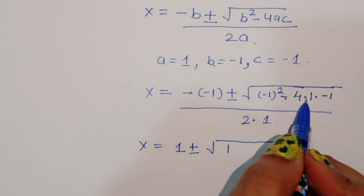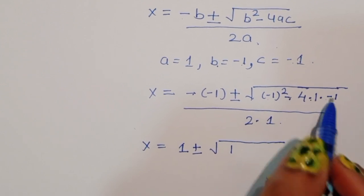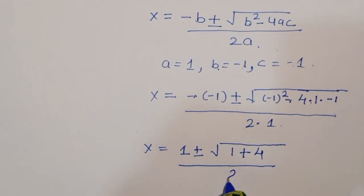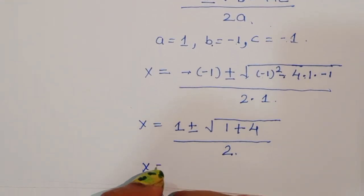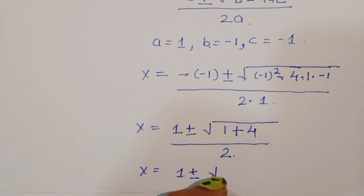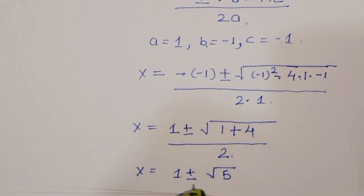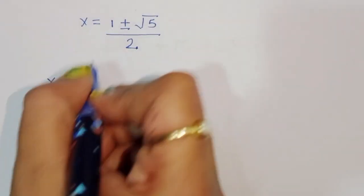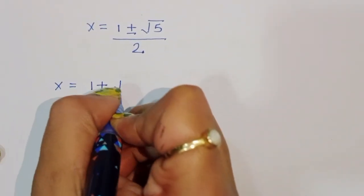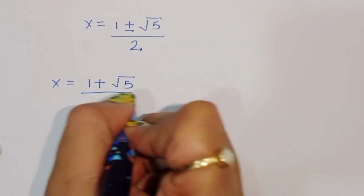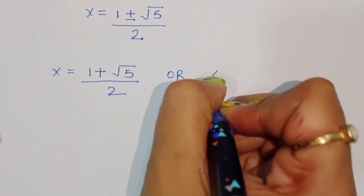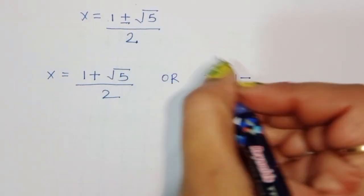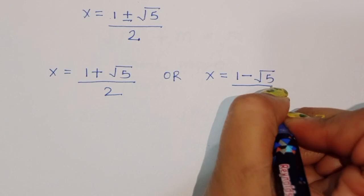Simplifying, we get plus 4 in the discriminant, divided by 2. So x is equal to 1 plus or minus square root of 5 divided by 2. This gives us x equal to (1 plus square root of 5) divided by 2, or x equal to (1 minus square root of 5) divided by 2.